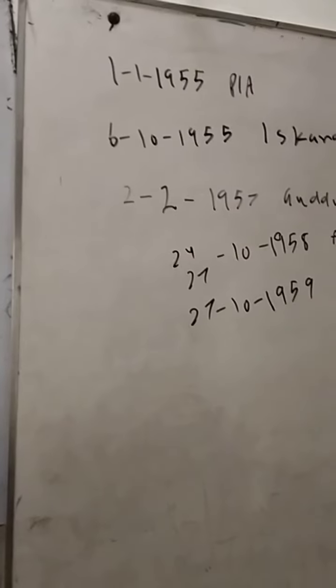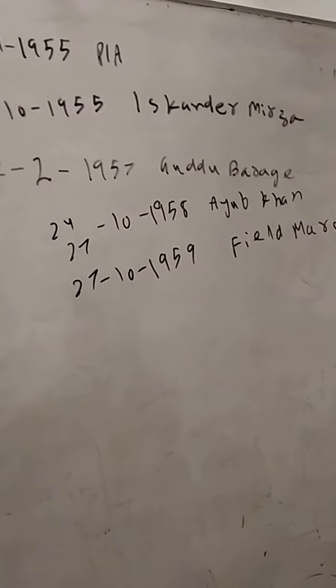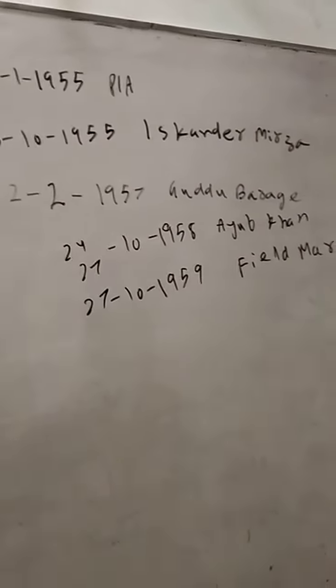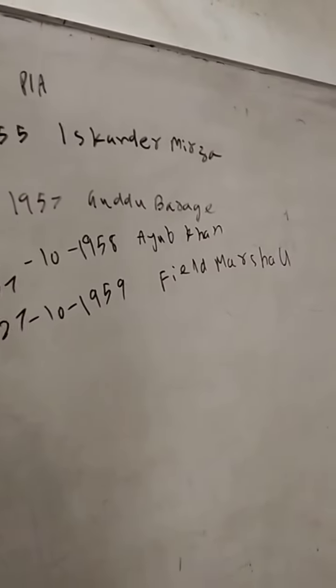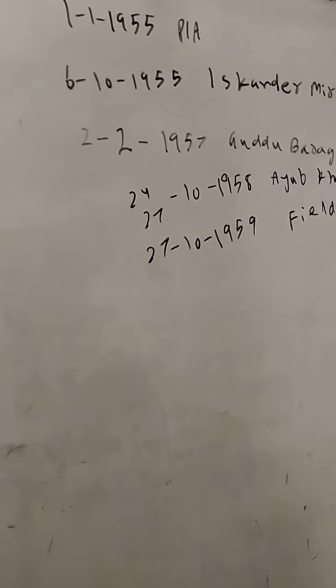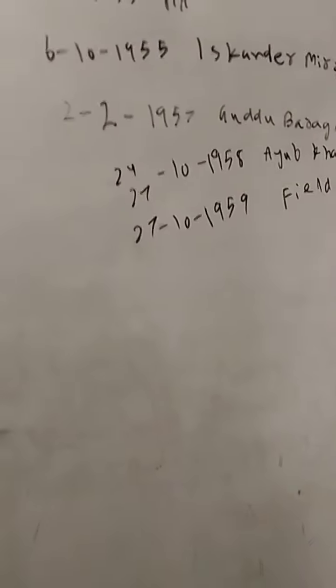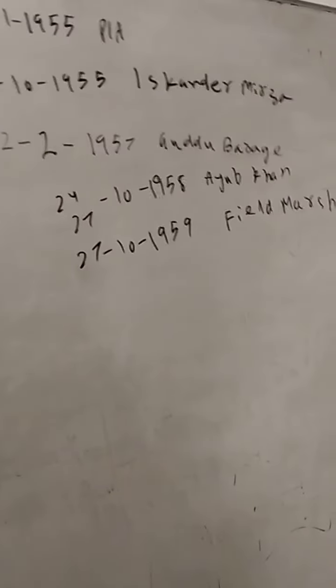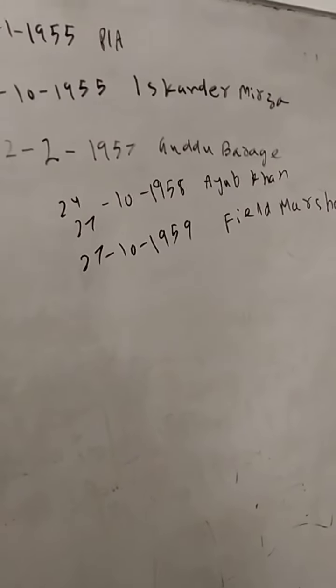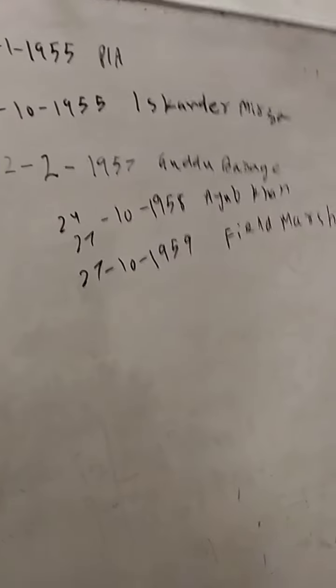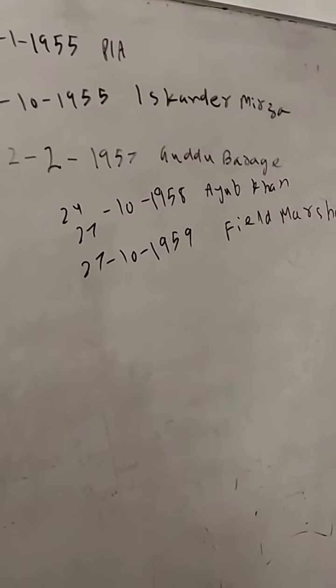2 February 1957, Iskander Mirza became the first President of Pakistan. 24 October 1958, Ayub Khan imposed martial law. Iskander Mirza was removed and Ayub Khan took power on 17 October.